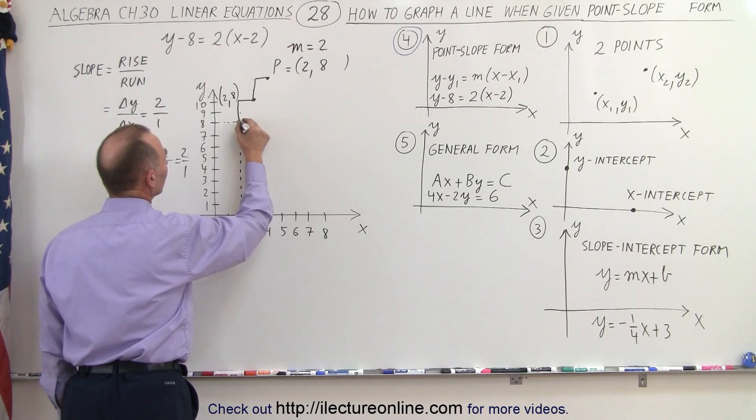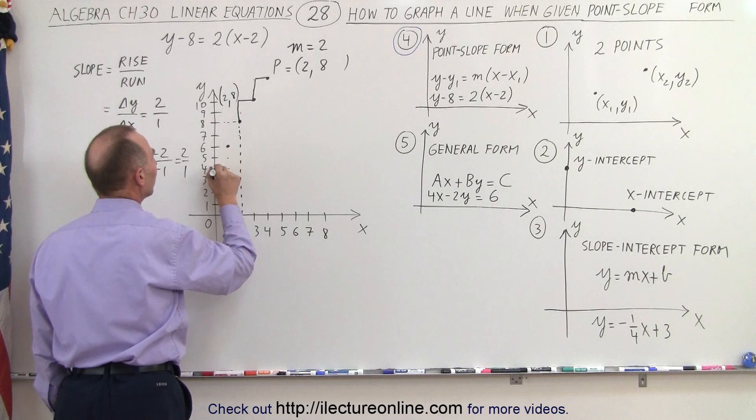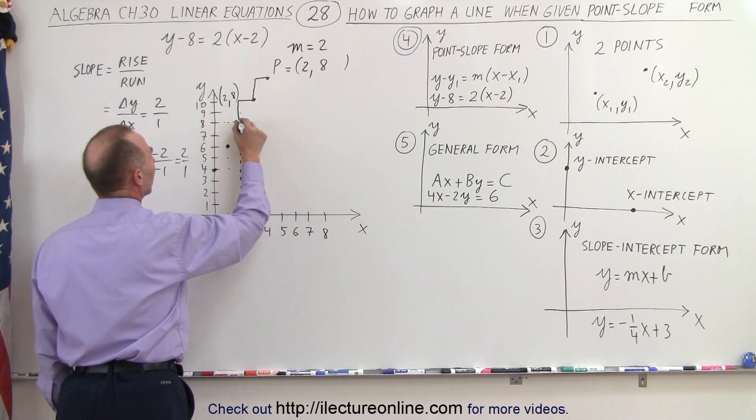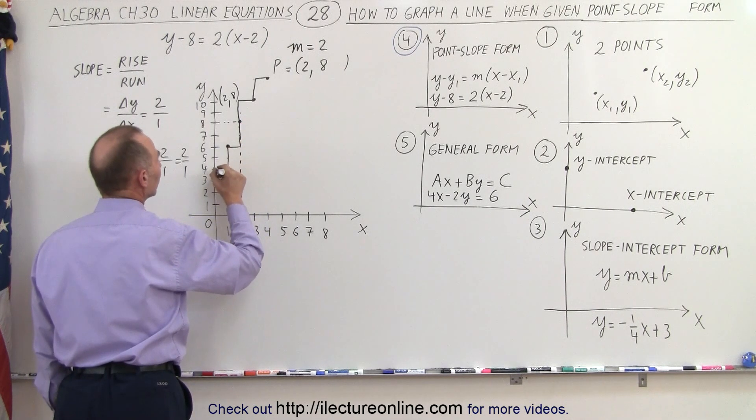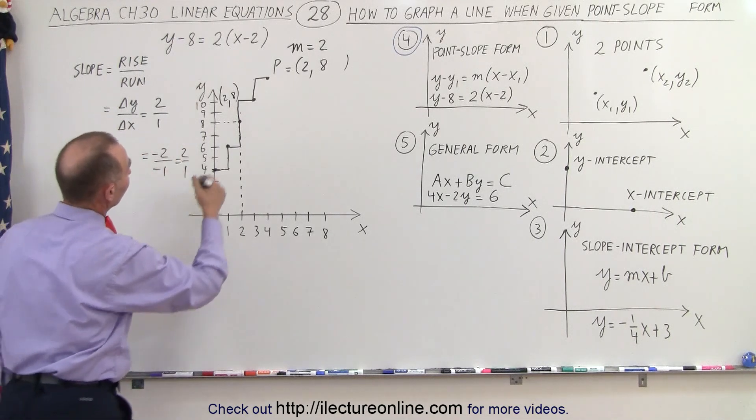So it means I can go down 1, 2, and to the left 1, down 1, 2, and to the left 1. And notice, that way, I can go the other direction and still have the same slope, and the points will still fall on the same line.